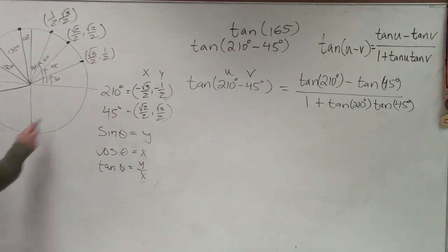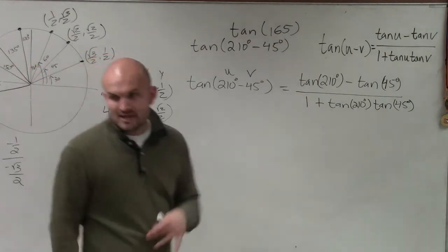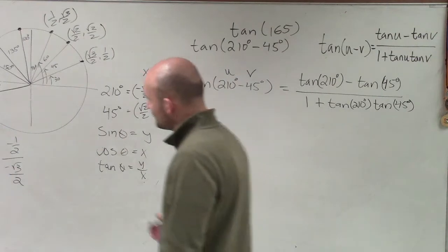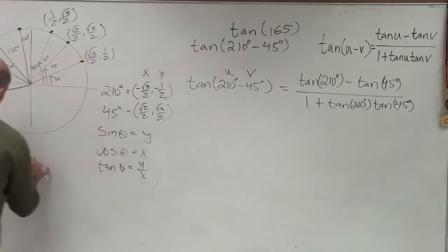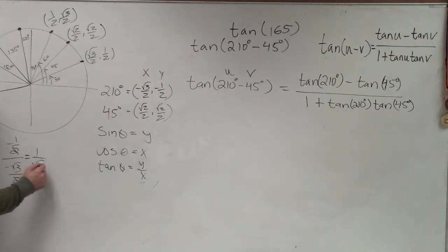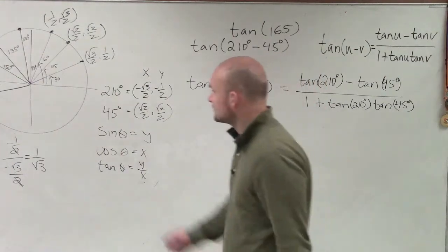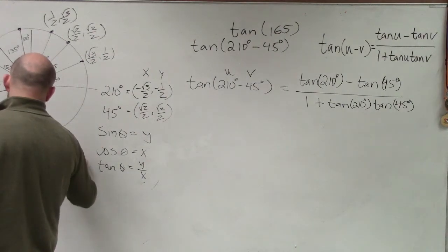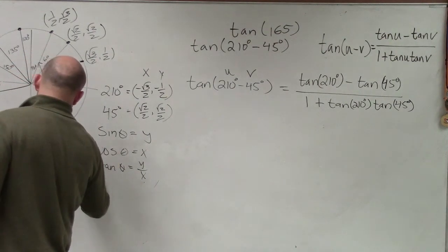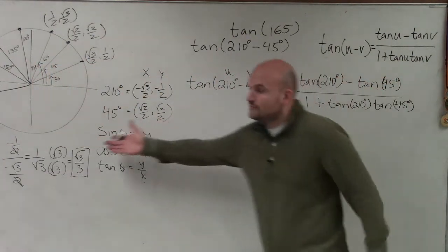For 210 degrees, the y-coordinate is negative 1 half divided by the x-coordinate which is negative 3 over 2. The 2s divide out when we multiply by the reciprocal, leaving us with positive 1 over the square root of 3, because the negatives divide into a positive. We rationalize the denominator by multiplying by square root of 3 on top and bottom, giving us square root of 3 over 3.